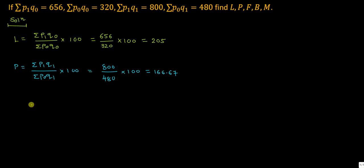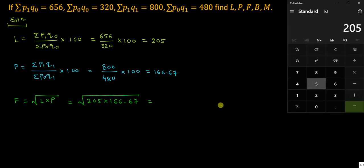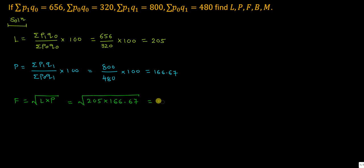Third one is Fischer's index number. F equals under root of L into P. It is equal to under root of 205 into 166.67. Multiply both amounts then take the under root: 205 multiplied by 166.67 gives 34167.35, and the under root is 184.84.